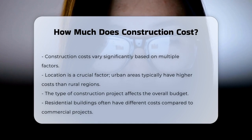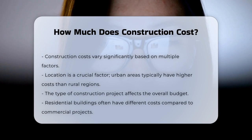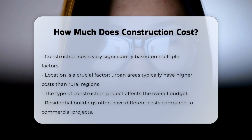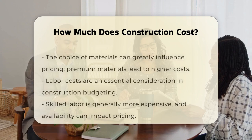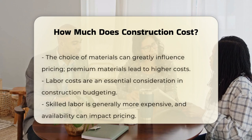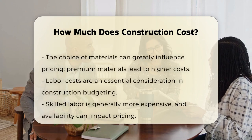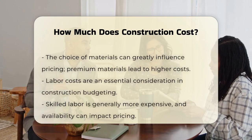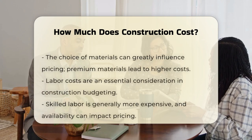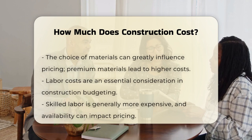The type of construction project also influences the overall budget. Residential buildings may differ in cost from commercial projects. Additionally, the choice of materials can greatly affect pricing — premium materials generally lead to higher costs.